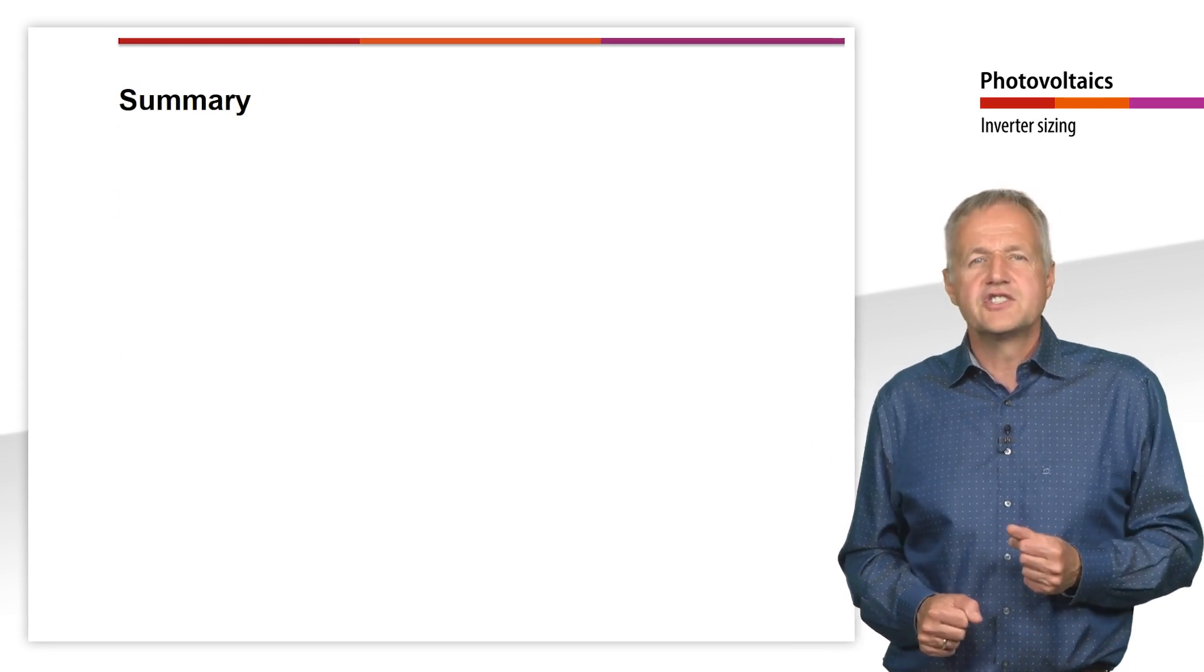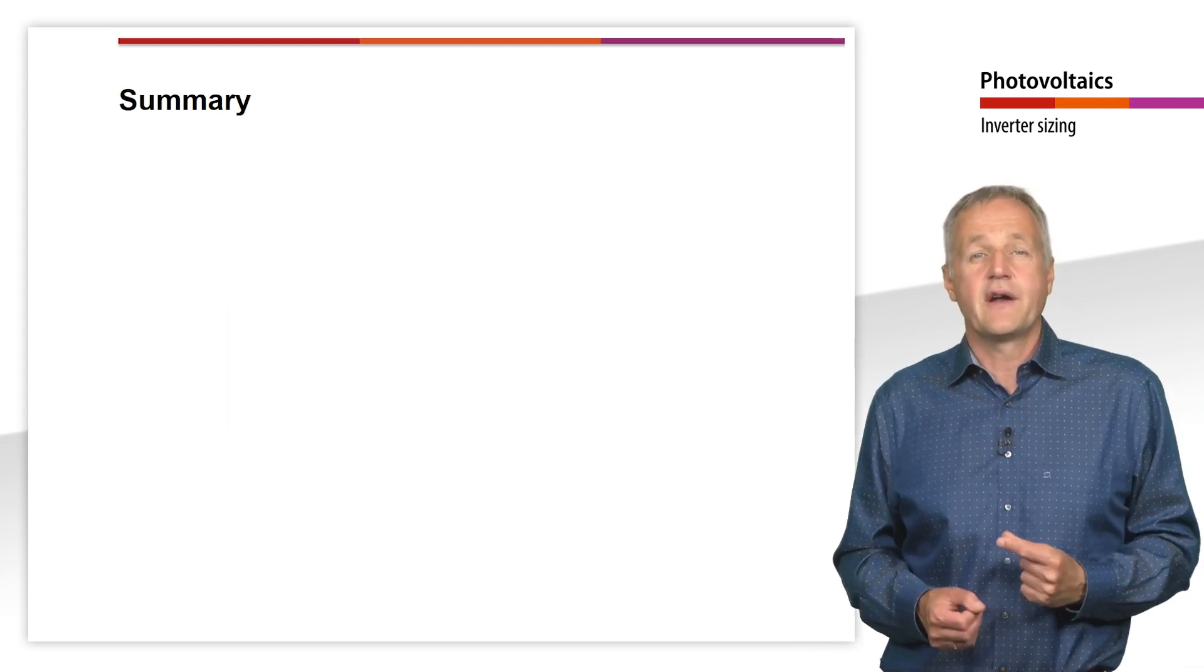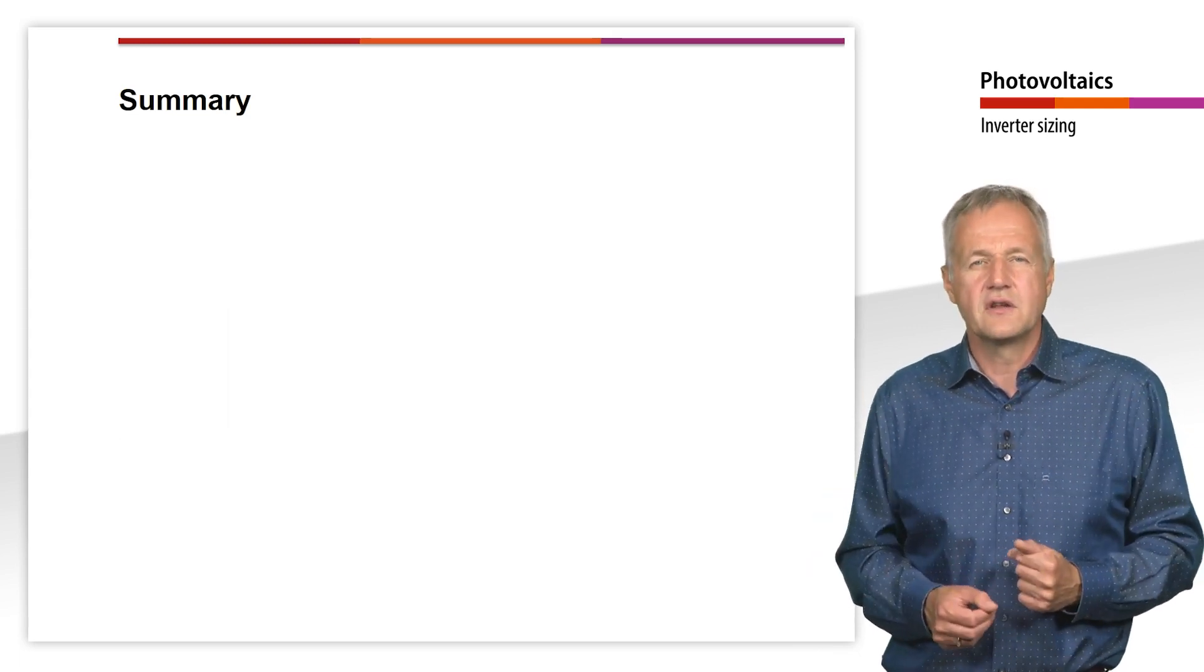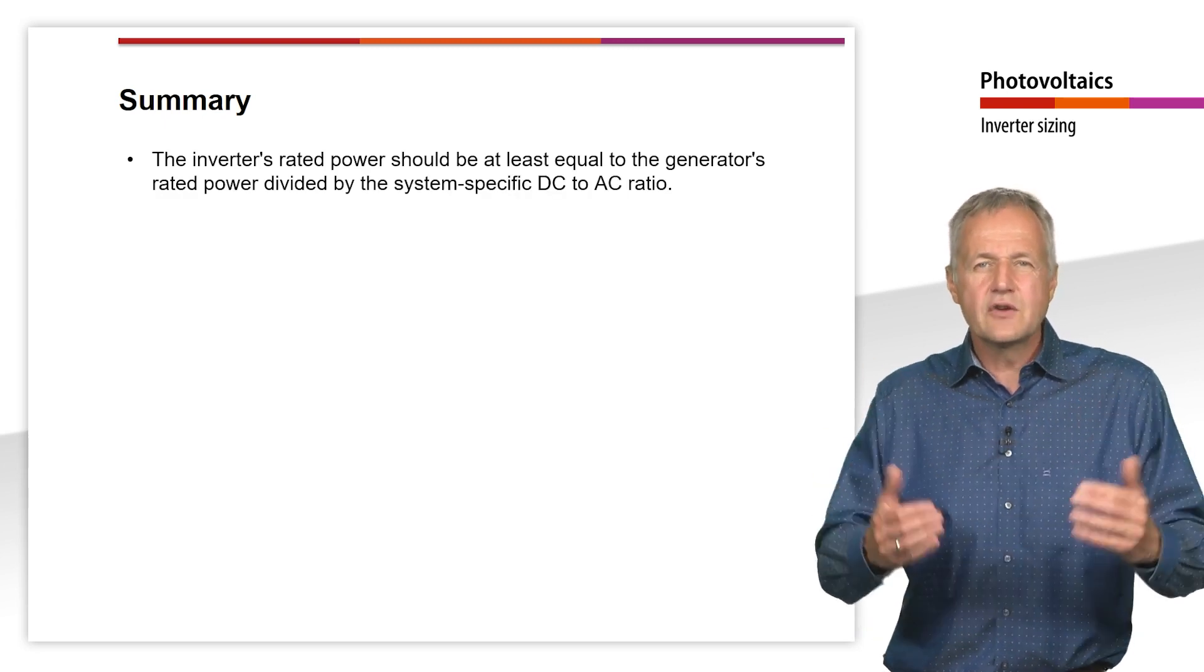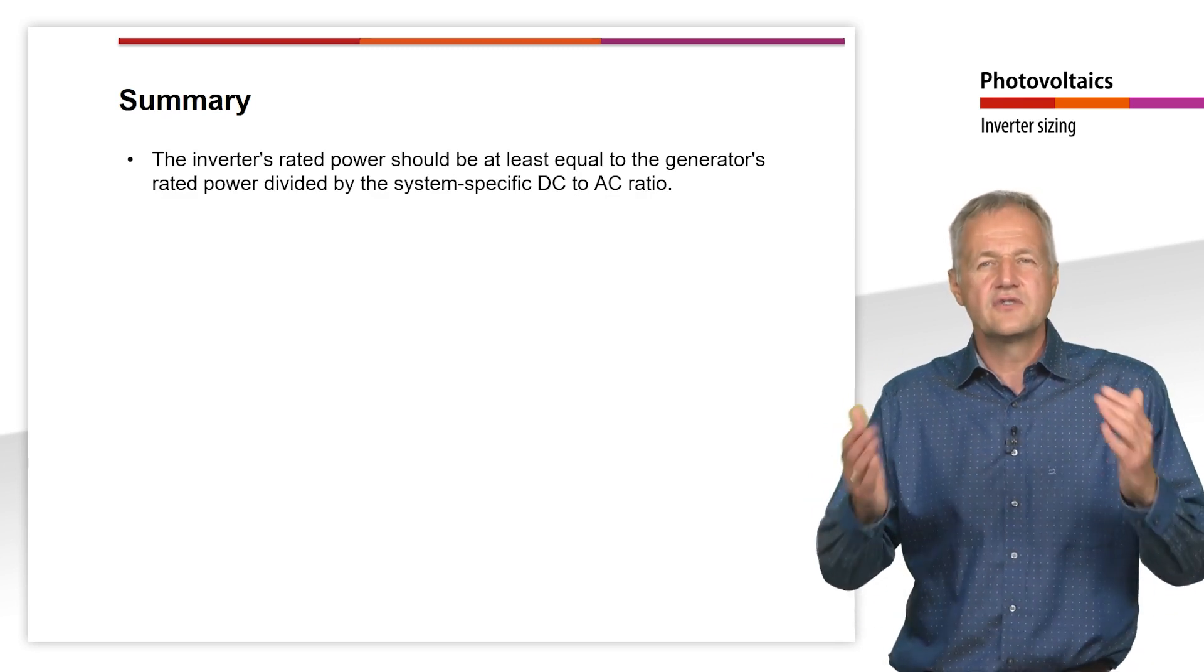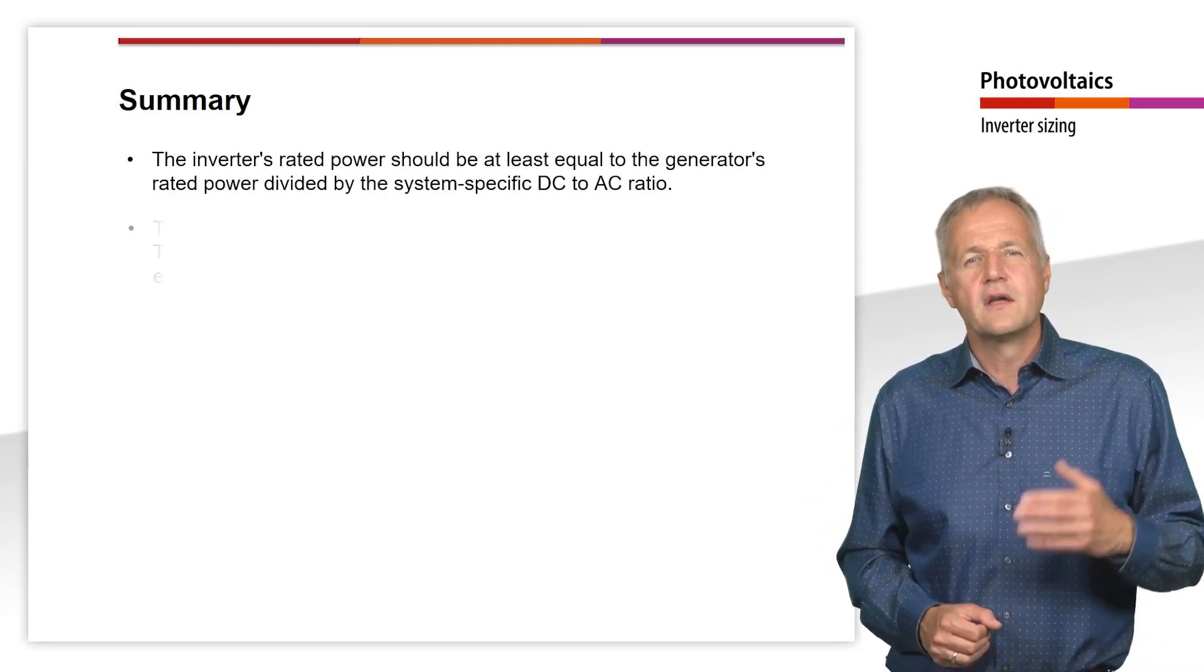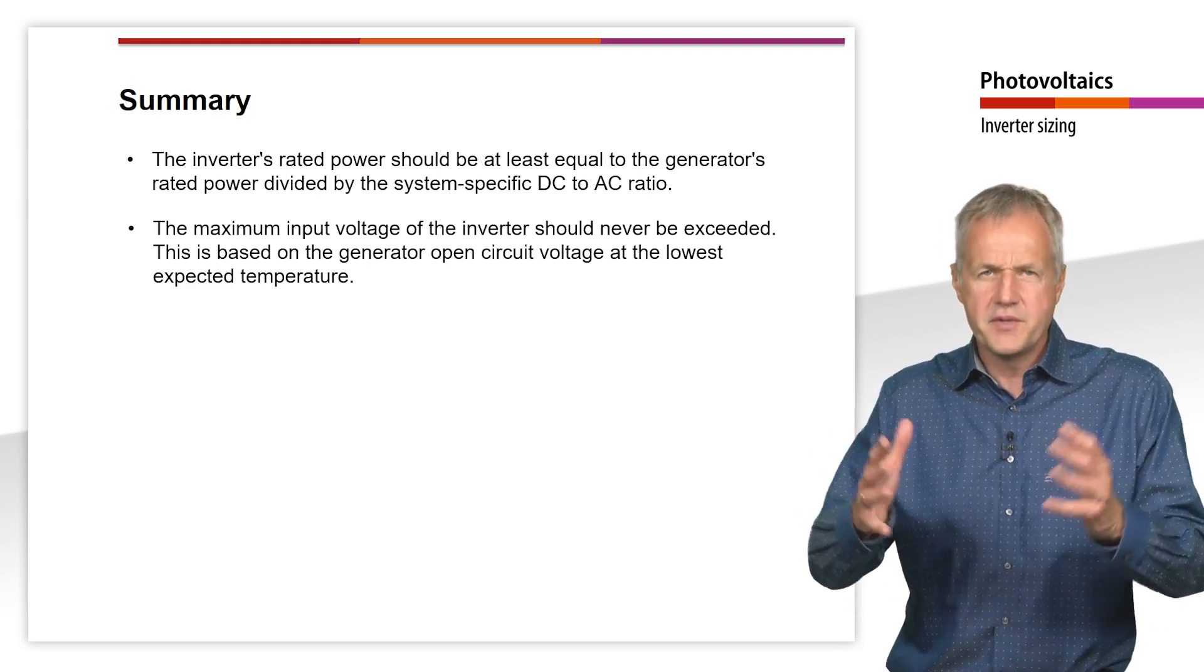Let's summarize this teaching unit. We have learned about three essential criteria for sizing the inverter. The inverter's rated power should be at least equal to the generator's rated power divided by the system-specific DC to AC ratio. The maximum input voltage of the inverter should never be exceeded.